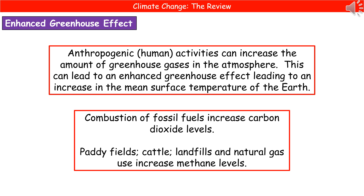Some of the main reasons for this are the combustion of fossil fuels, which leads to the increase in carbon dioxide levels, and also things like paddy fields and increased numbers of cattle which we're grazing for beef production. Landfills and natural gas use also increase the level of methane. We don't generally talk about the level of water vapor in the atmosphere because that's something we can't actually control. Water will evaporate when we have warmth on the planet, so we are focused more on carbon dioxide and methane because they're the ones we have greater control over.